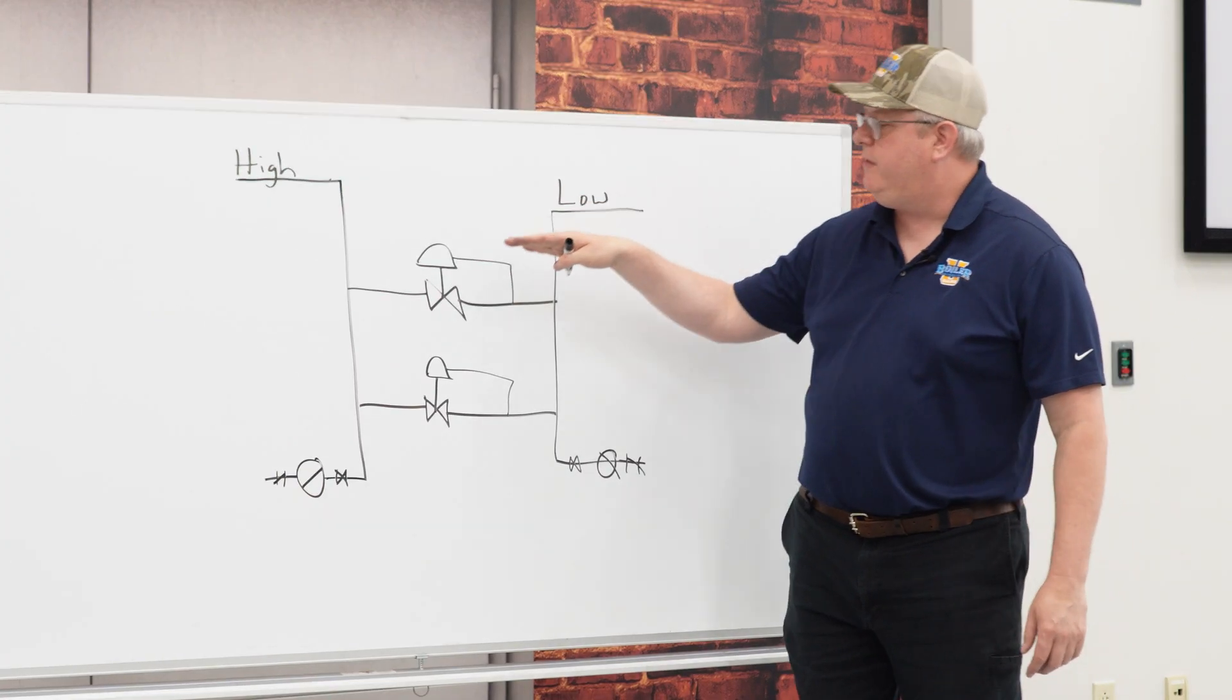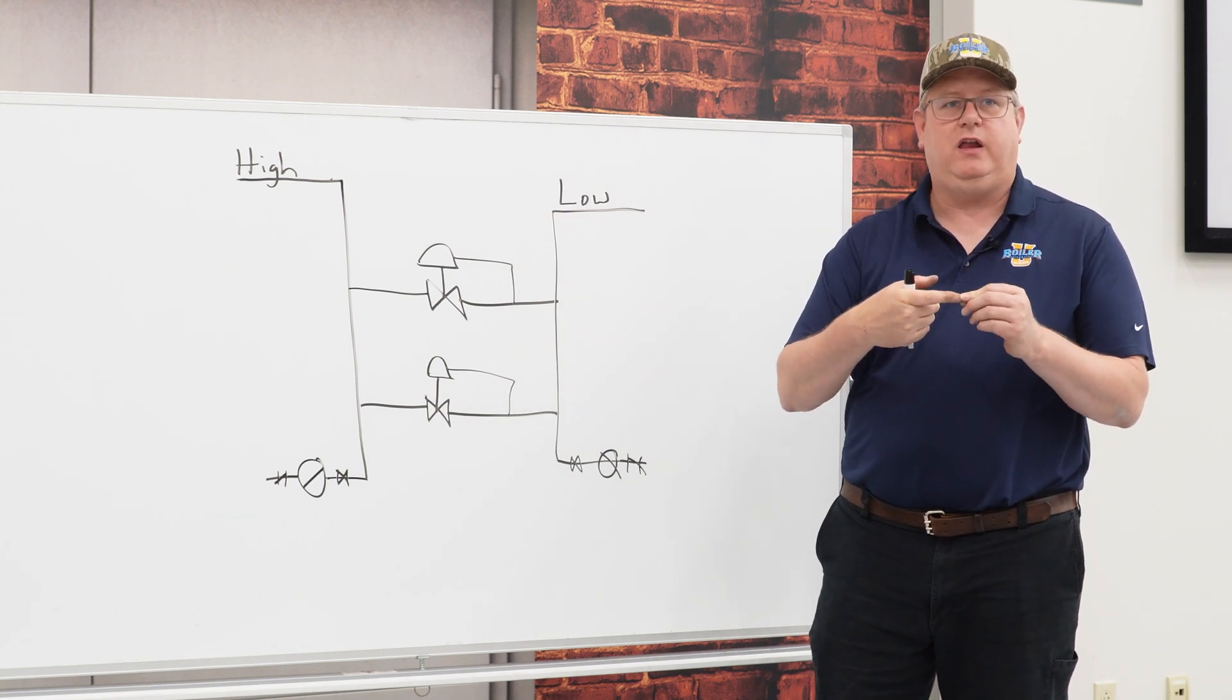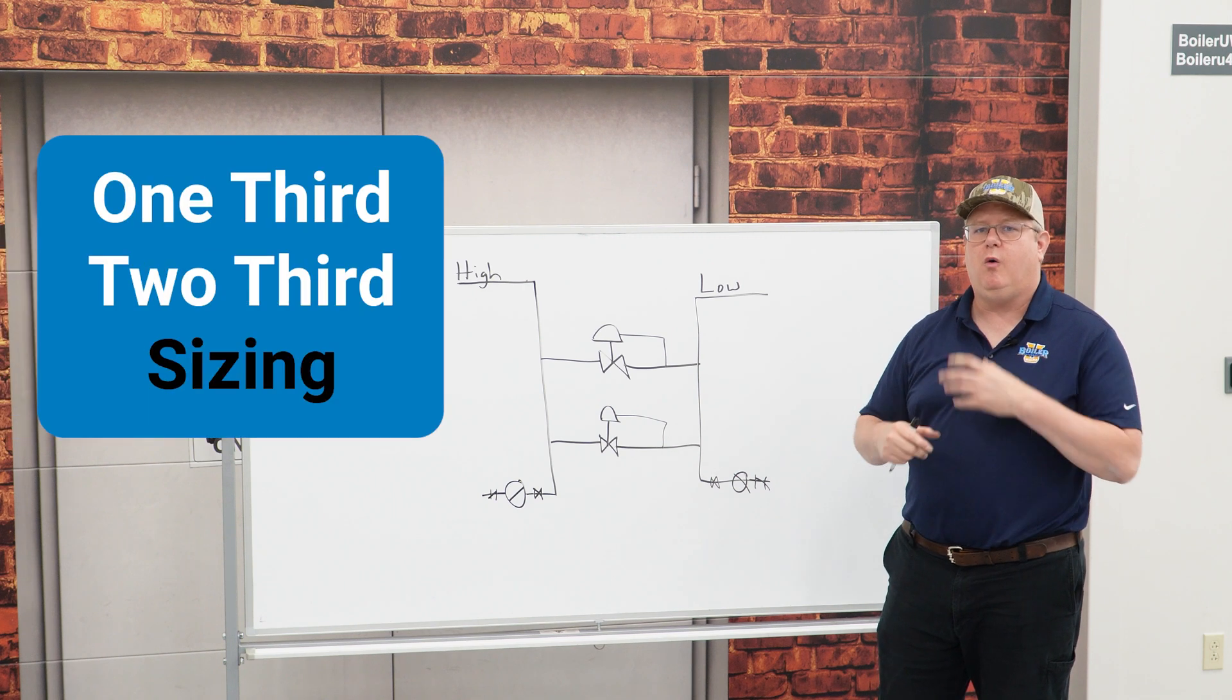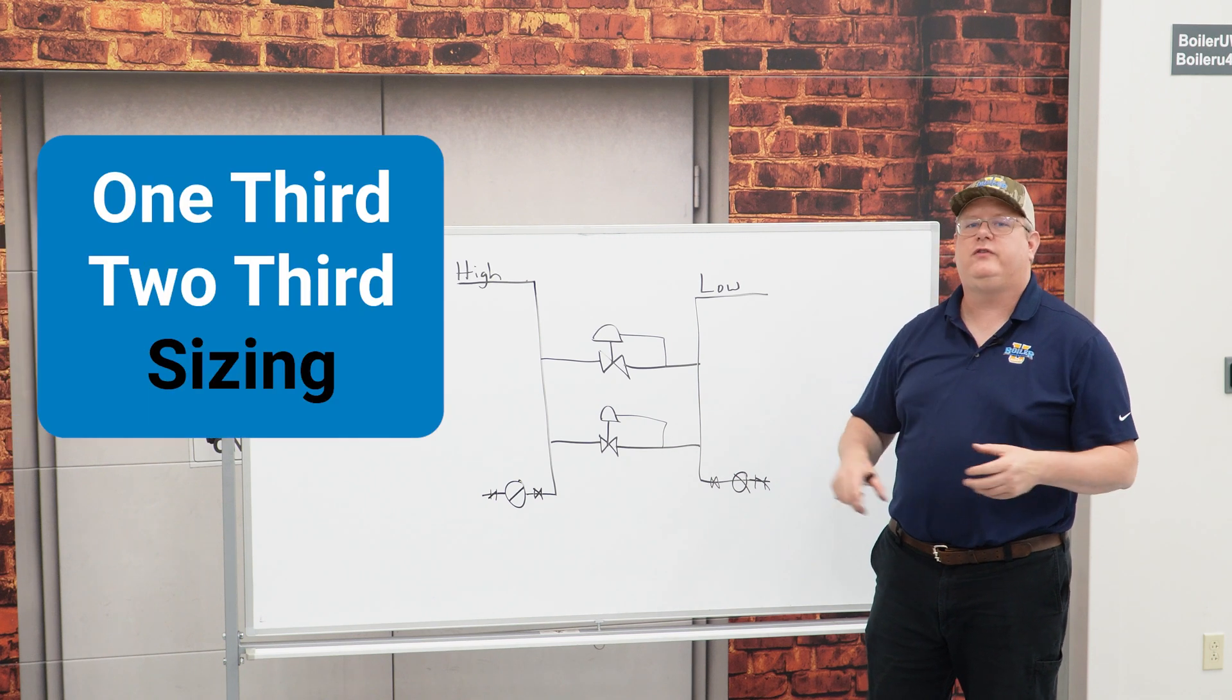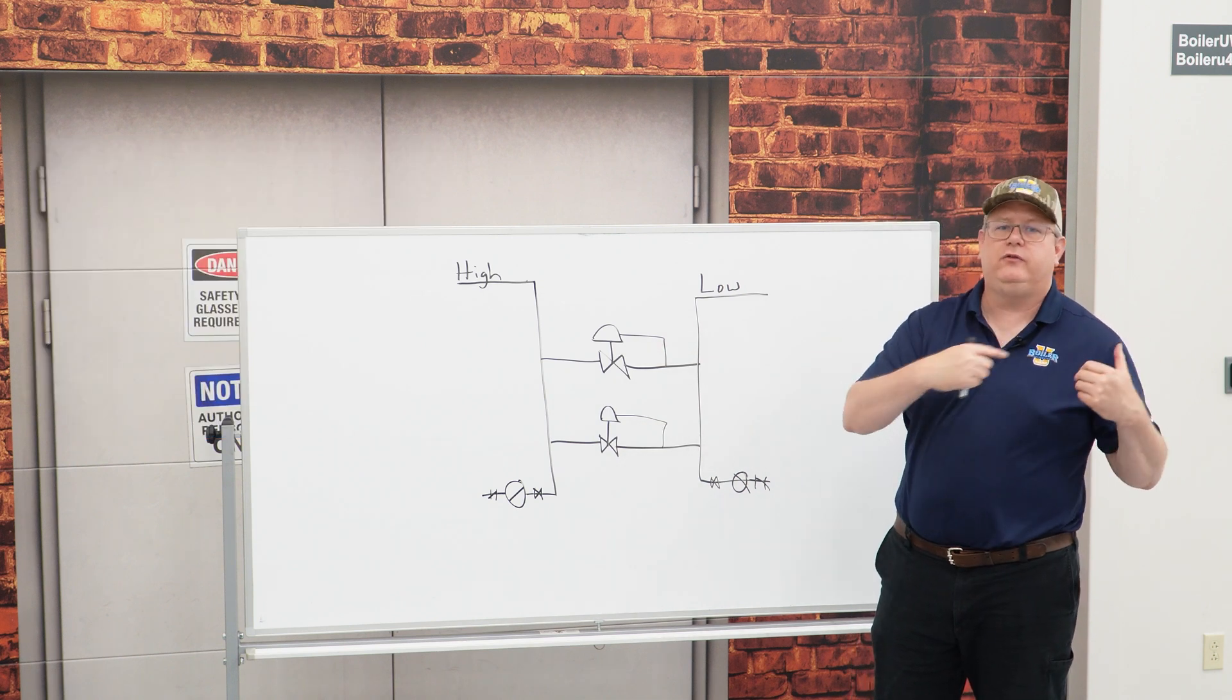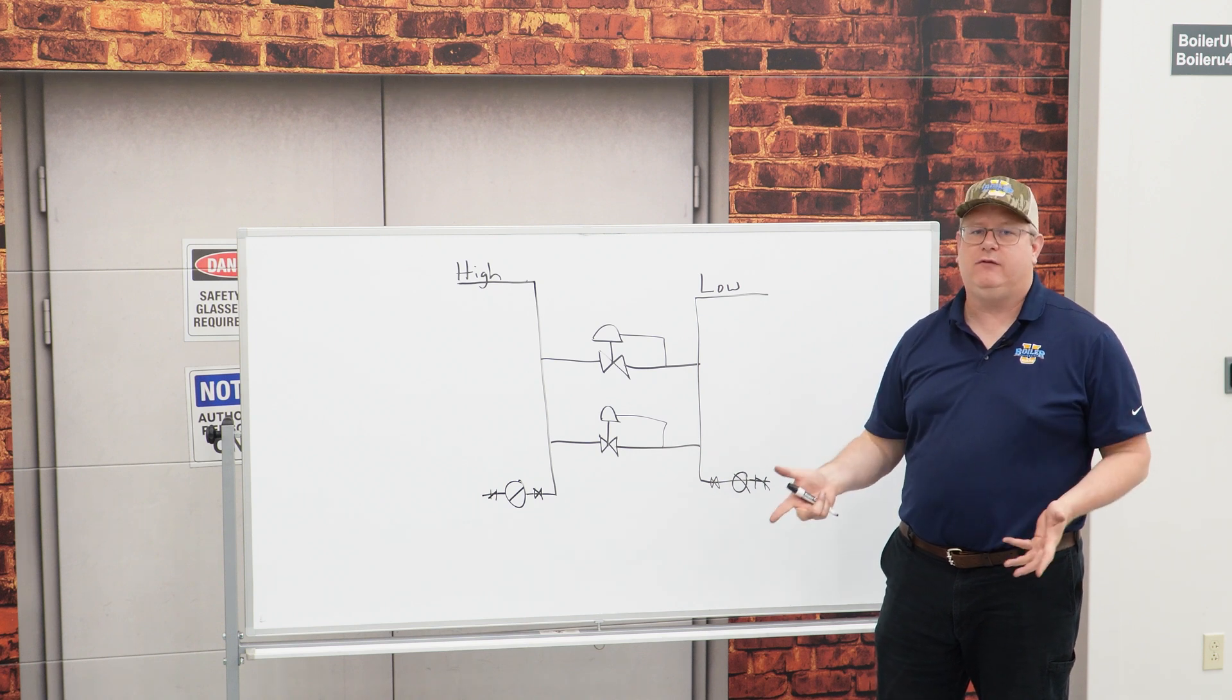The benefit of having multiple PRVs are that we've got some redundancy in any situation, and also by using what we call a one-third, two-third sizing of the PRVs, we can actually control the downstream pressure a little more accurately under a variety of loads.